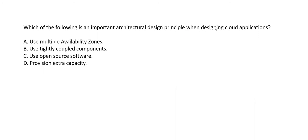The next question: which of the following is an important architectural design principle when designing cloud applications? The options are: use multiple AZs, use tightly coupled components, use open source software, and provision extra capacity. Using tightly coupled components is purely wrong — you should always use loosely coupled components. Open source software is not a recommended best practice due to potential security risks or hidden code.